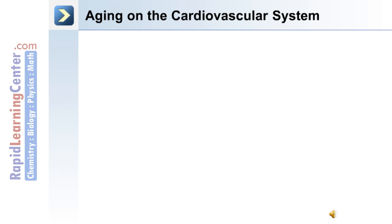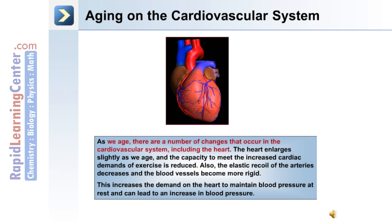The effects of aging on the cardiovascular system: as we age, a number of changes occur in the cardiovascular system including the heart. The heart itself enlarges slightly, and the capacity to meet the increased cardiac demands of exercise is reduced. Also, the elastic recoil of the arteries decreases and the blood vessels become more rigid. This increases the demand on the heart to maintain blood pressure at rest and can lead to an increase in blood pressure.